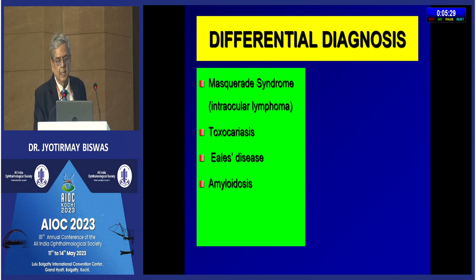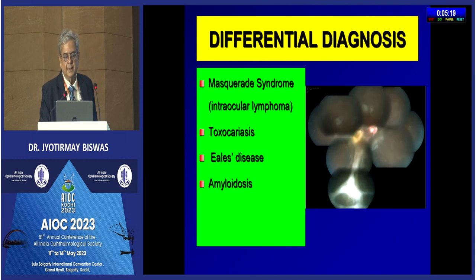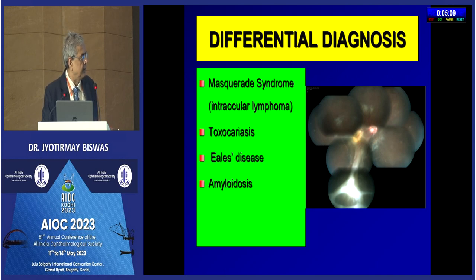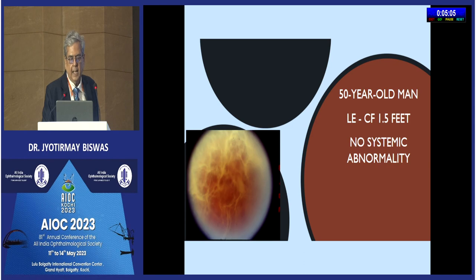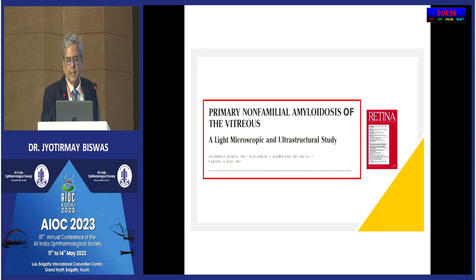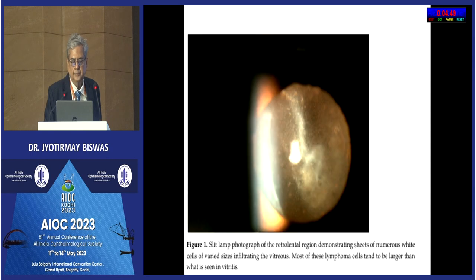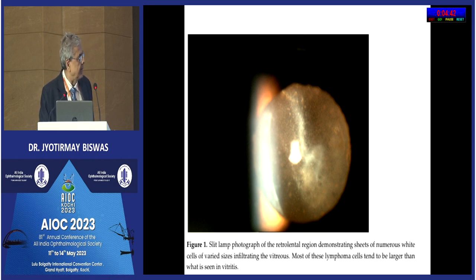Masquerade syndrome, toxocariasis, rare disease, and amyloidosis can be kept in the differential diagnosis. The most important differential I keep is intraocular lymphoma, particularly in elderly patients over 50 years having vitreous haze. Toxocara can present with a snowbanking-like presentation but with vitreous strands going from the periphery to the optic disc. Vitreous amyloidosis is a rare key scenario. Vitroretinal lymphoma is an important differential. Published from Dr. Manfred's group, the cells in the vitreous would be large — much larger — that's a pointer.